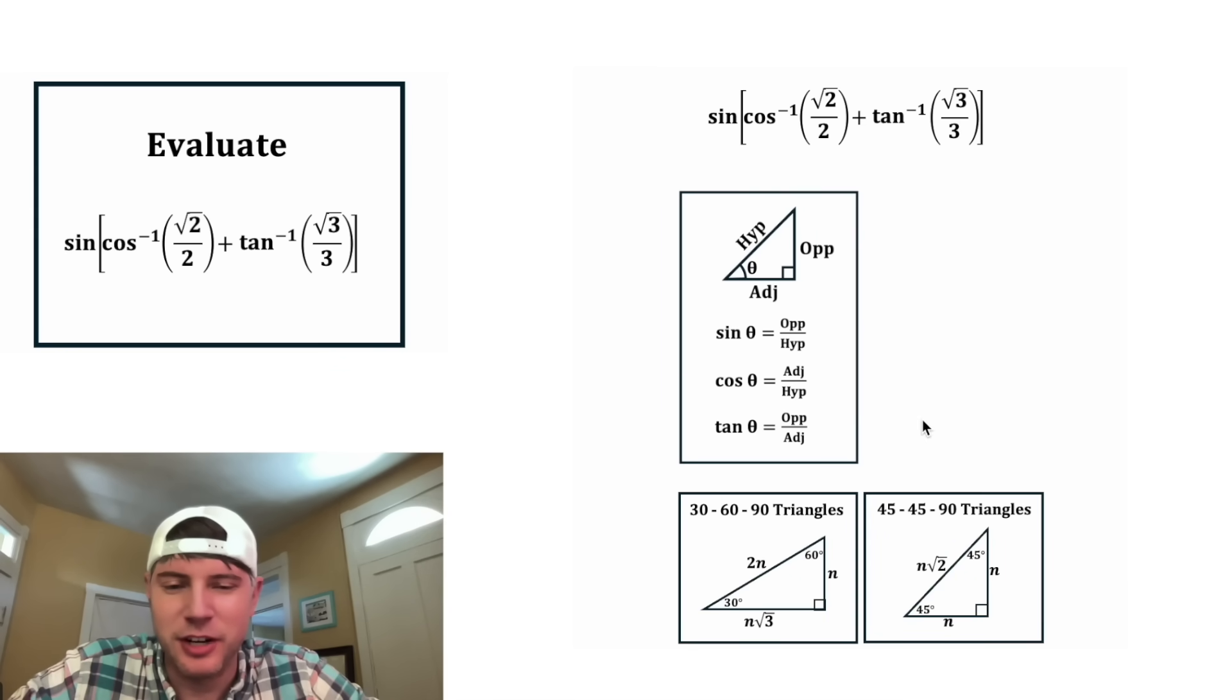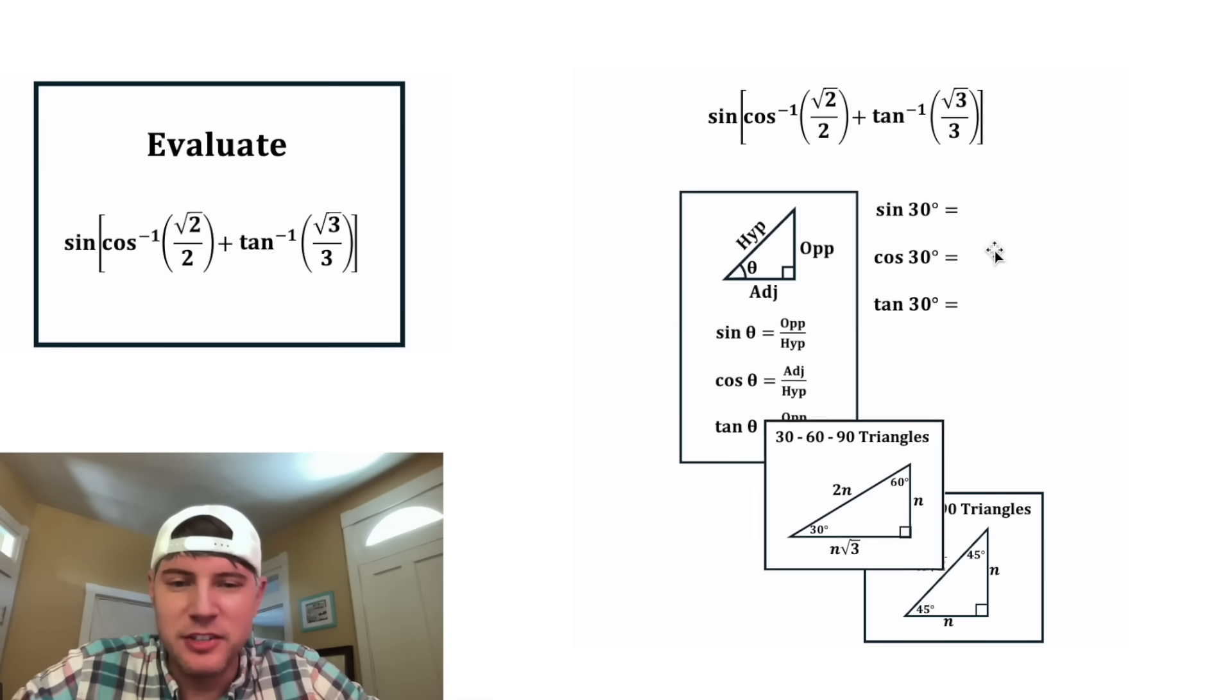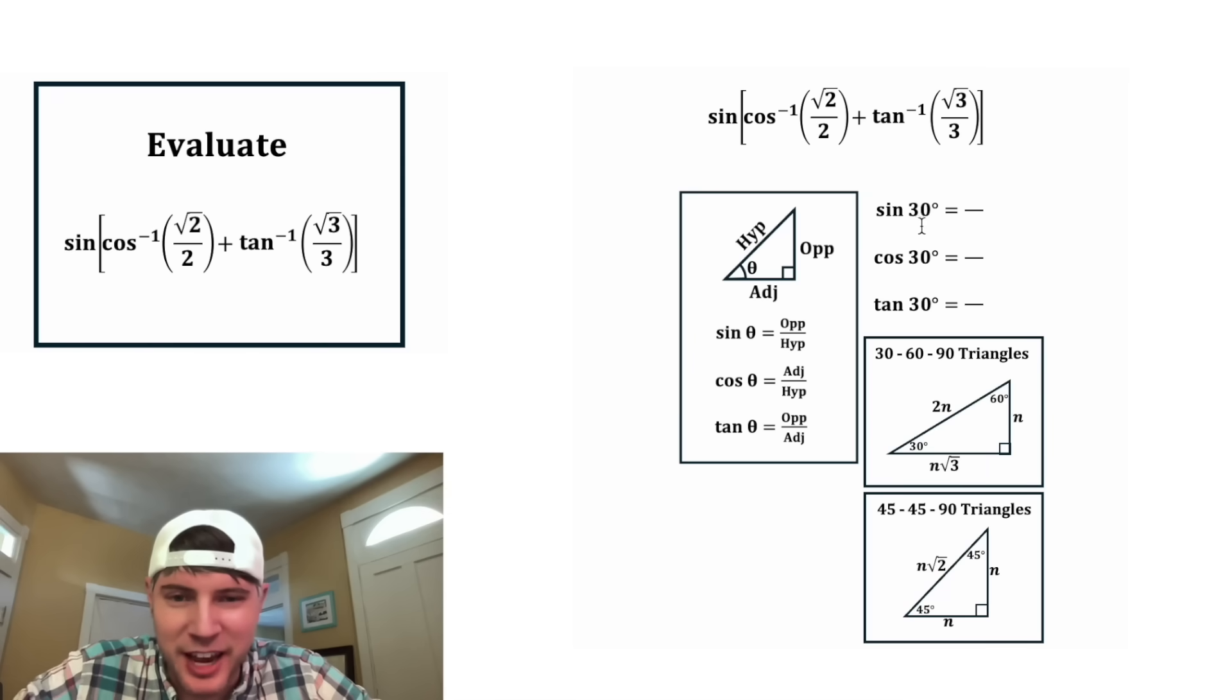We use these notes for special right triangles. We have 30, 60, 90 triangles and 45, 45, 90 triangles. The size of these two triangles will always be in these proportions to each other. So if we wanted to find sine, cosine, or tangent of 30, we would use these notes right here. For the sine of 30, it's gonna be the opposite side, which is the n, over the hypotenuse, which is 2n. And that's the same thing as 1n over 2n, and that simplifies to 1 half.